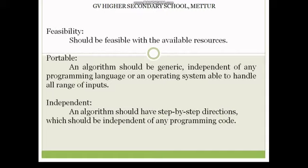If you look at number five — we also look at feasibility, portable, and independent. Feasibility: should be feasible with available resources. Portable: an algorithm should be generic, independent of any programming language or operating system, and able to handle all range of inputs. Independent: an algorithm should have step-by-step directions which should be independent of any programming code. So the algorithm is a characteristic of everybody.